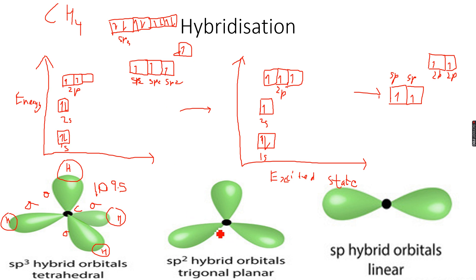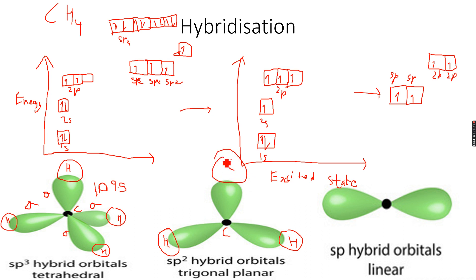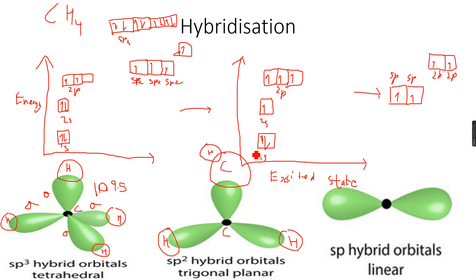These three SP2 orbitals will form sigma bonds. For example, let's say this is carbon, with a hydrogen here and a hydrogen here, and another SP2 hybridized carbon over here. Let me draw a more accurate diagram — this is one SP2 hybridized carbon atom and another SP2 hybridized carbon, each also attached to hydrogen atoms.